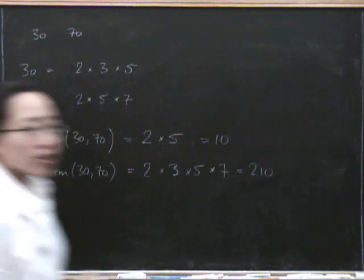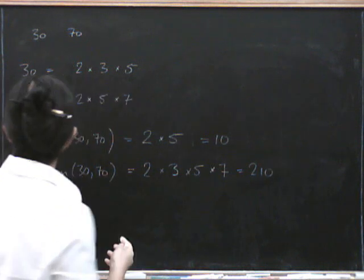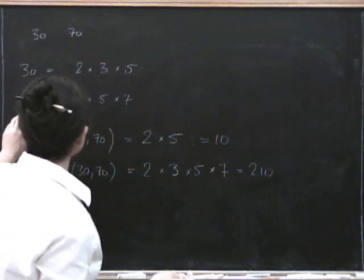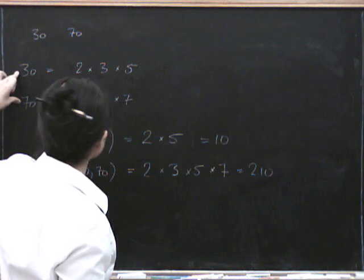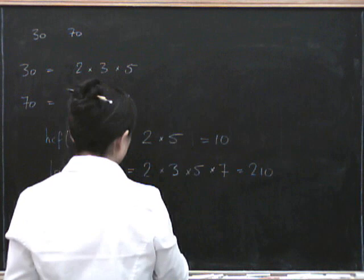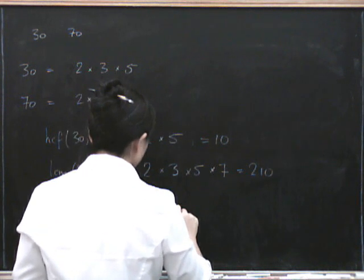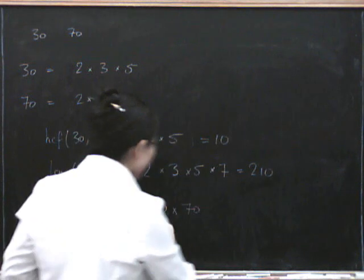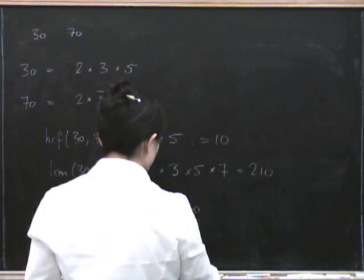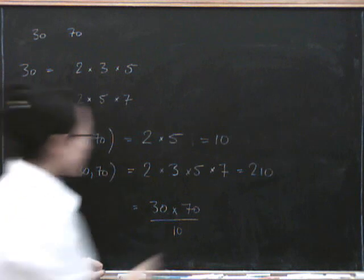Now we can look at the relationship between the two. If we were naive about it, we'd say: well, to find the lowest common multiple, we can just multiply the two numbers together. But that's actually a bit too big — we can divide it back out by the highest common factor. And indeed, 30 times 70 divided by 10 is 210.